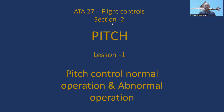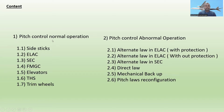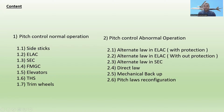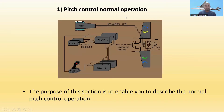This is ATA Chapter 27, Flight Control, Section 2 — Pitch. Under pitch control normal operation, we have: 1.1 sidesticks, 1.2 ELAC, 1.3 SEC, 1.4 FMGC, 1.5 elevators, 1.6 THS, and 1.7 trim wheels. Under pitch control abnormal operation, we cover 2.1 alternate law in ELAC with protection, 2.2 alternate law in ELAC without protection, 2.3 alternate law in SEC, 2.4 direct law, 2.5 mechanical backup, and 2.6 pitch law reconfiguration.